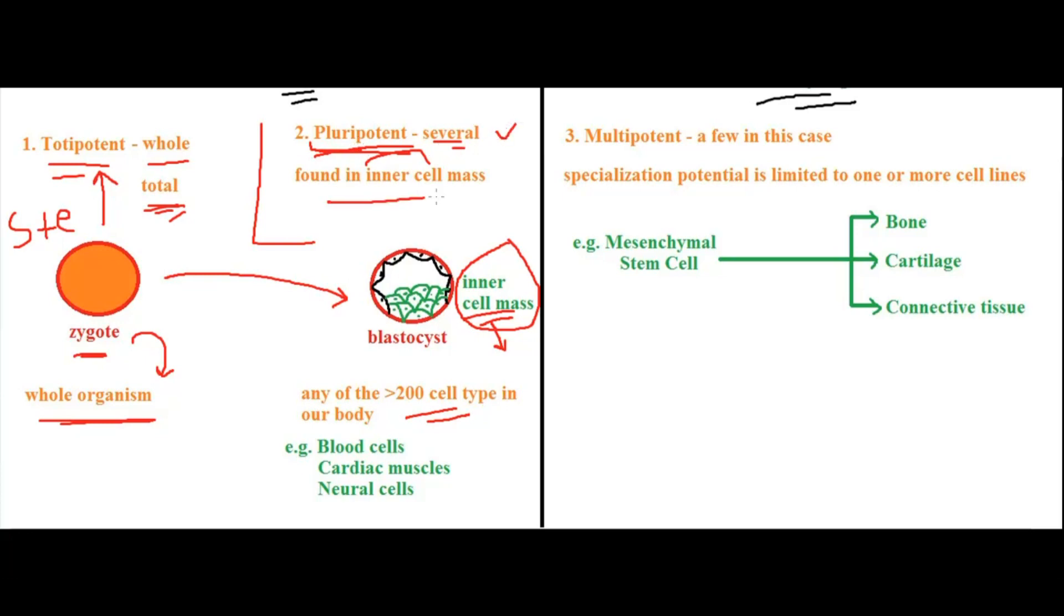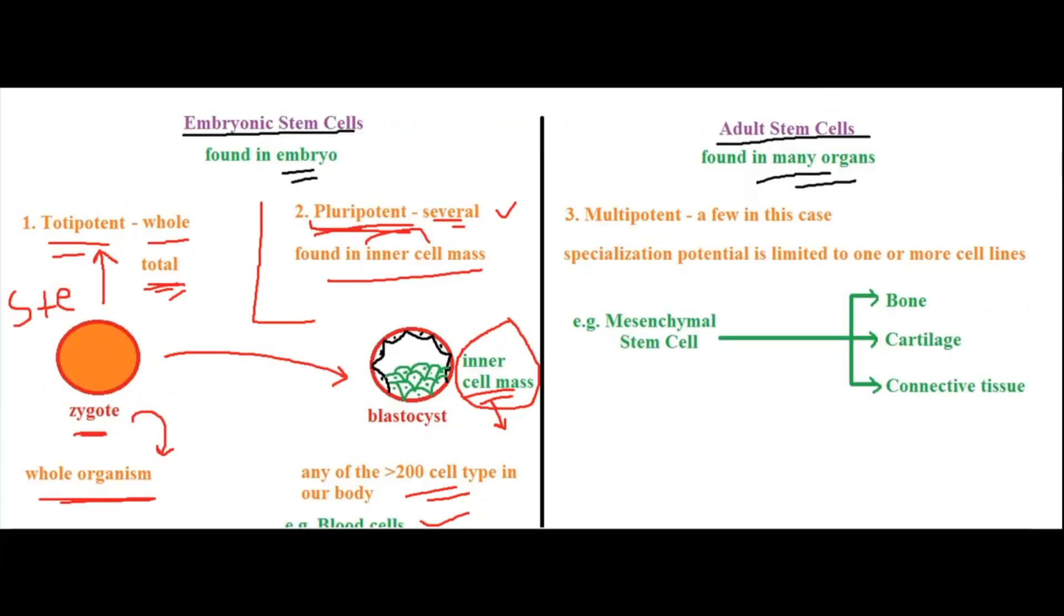Pluripotent cells are found in the inner cell mass, and examples are all the blood cells, cardiac muscles, and neural cells. This was about embryonic stem cells—totipotency and pluripotency are related to embryonic stem cells.